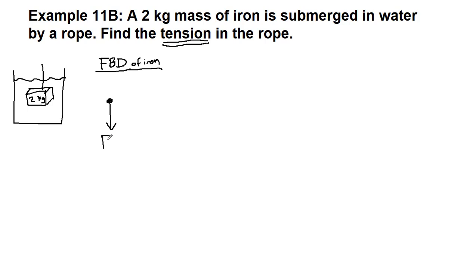Gravity is acting straight down. Gravity is mass times little g. So two times 9.8, which is 19.6 newtons. And we have the rope, so there's a tension force up.